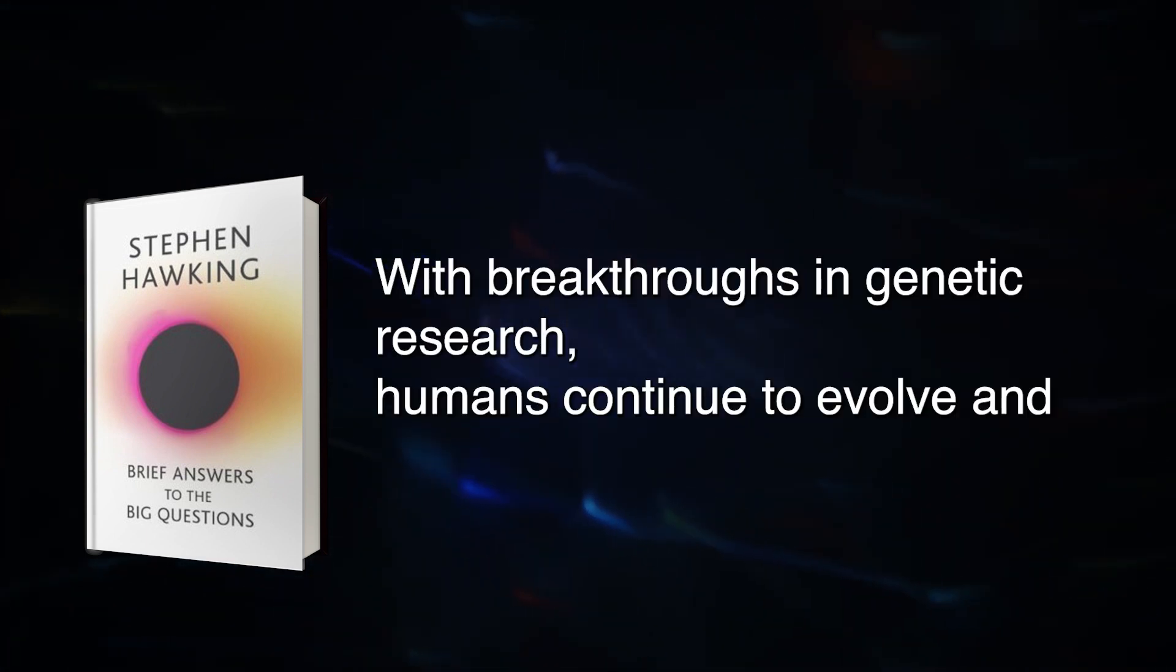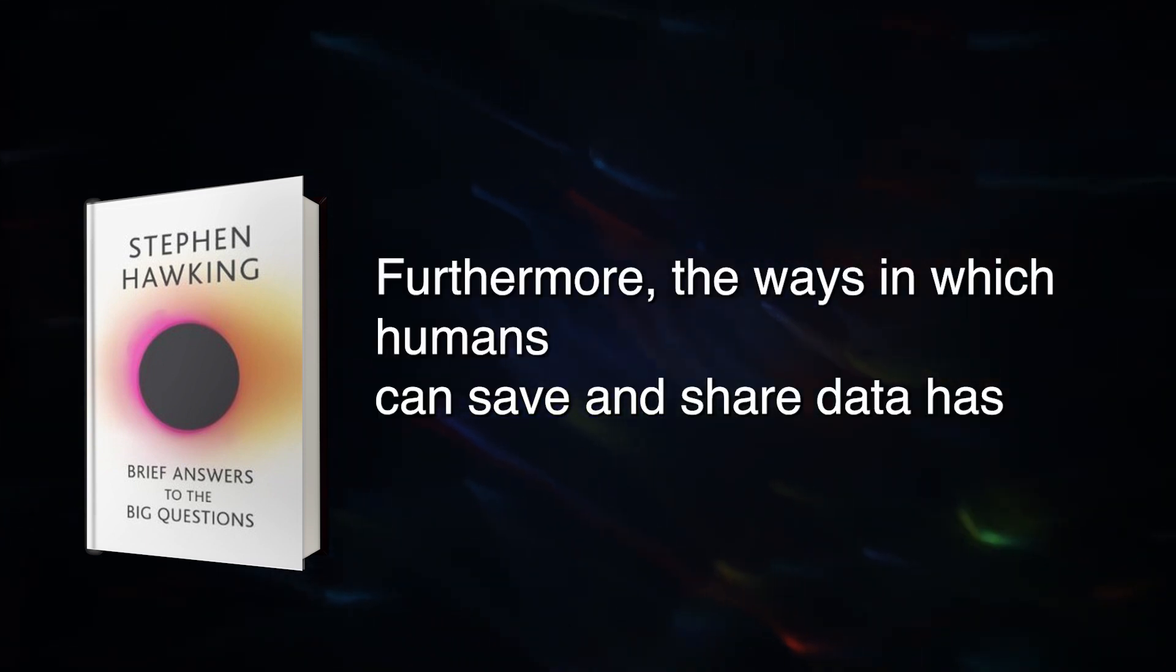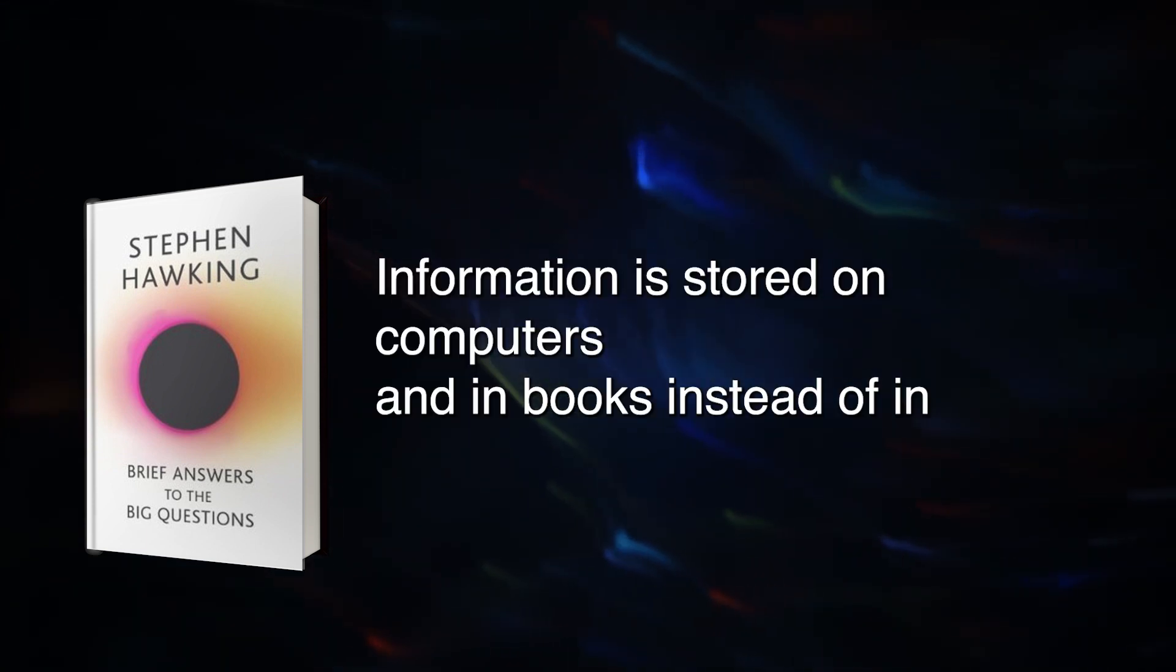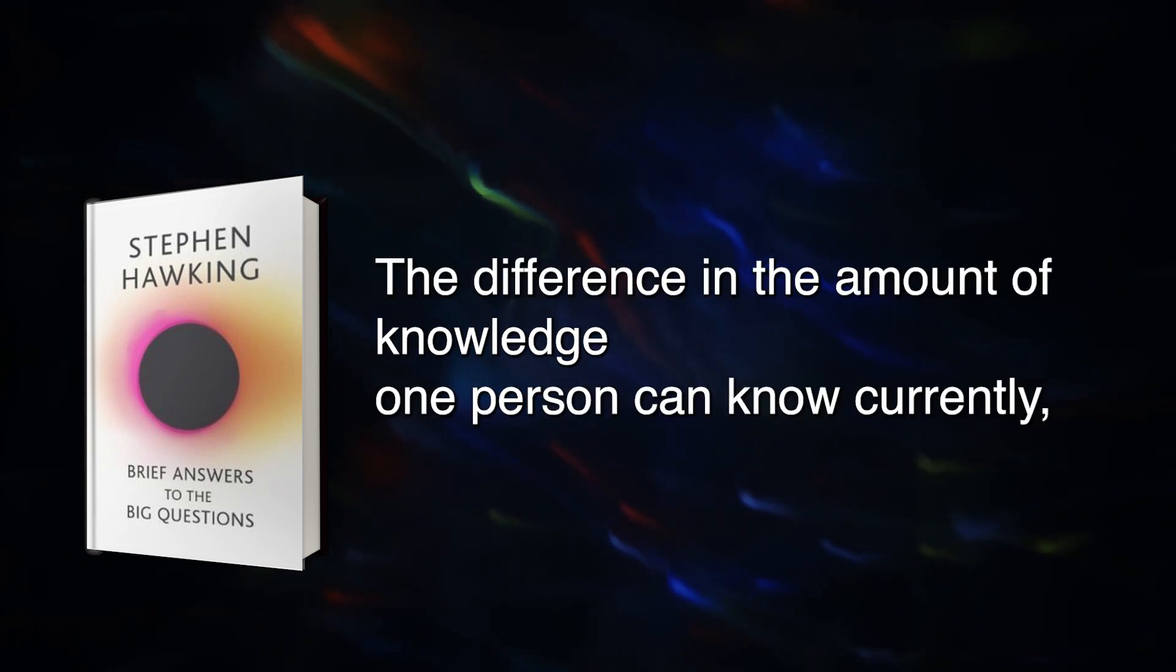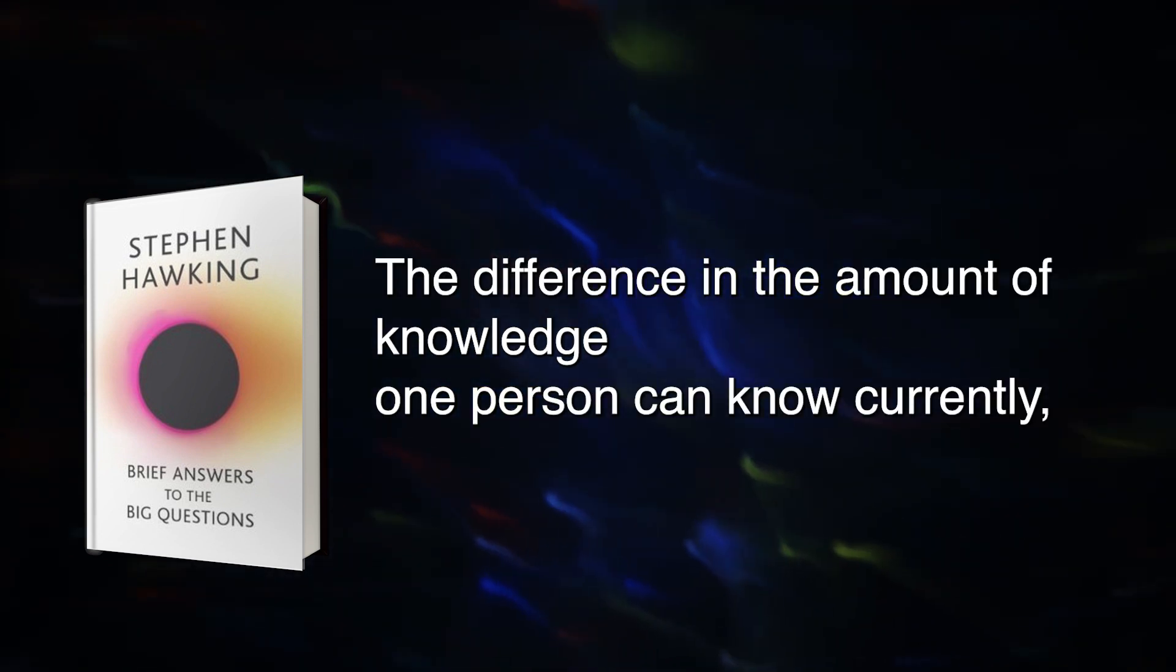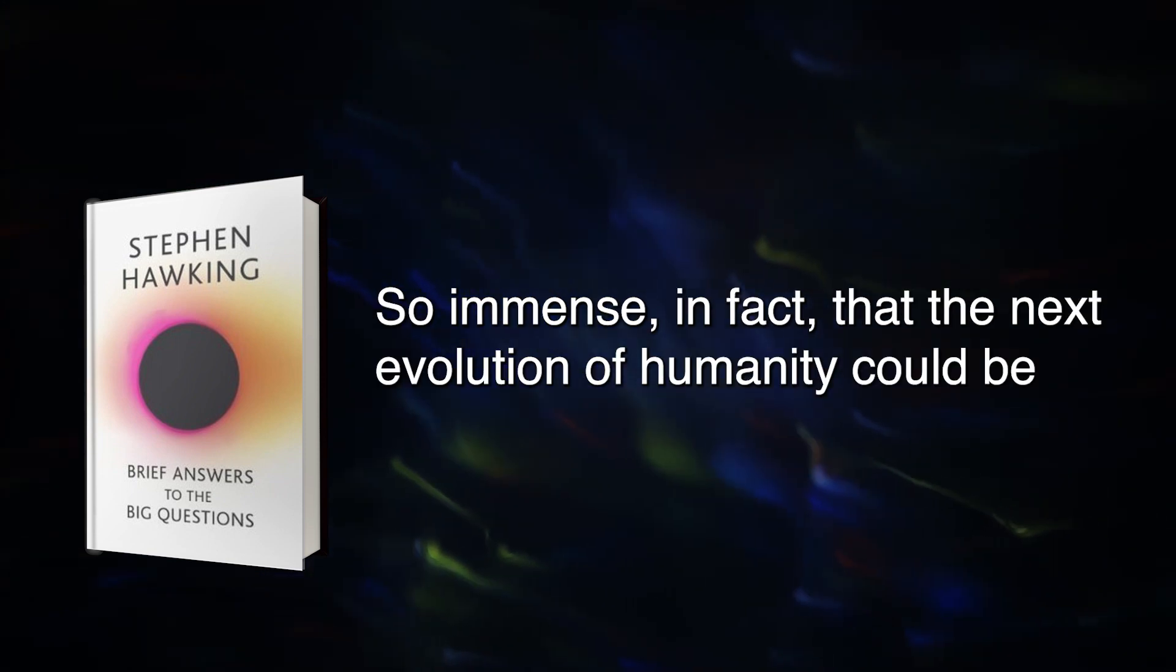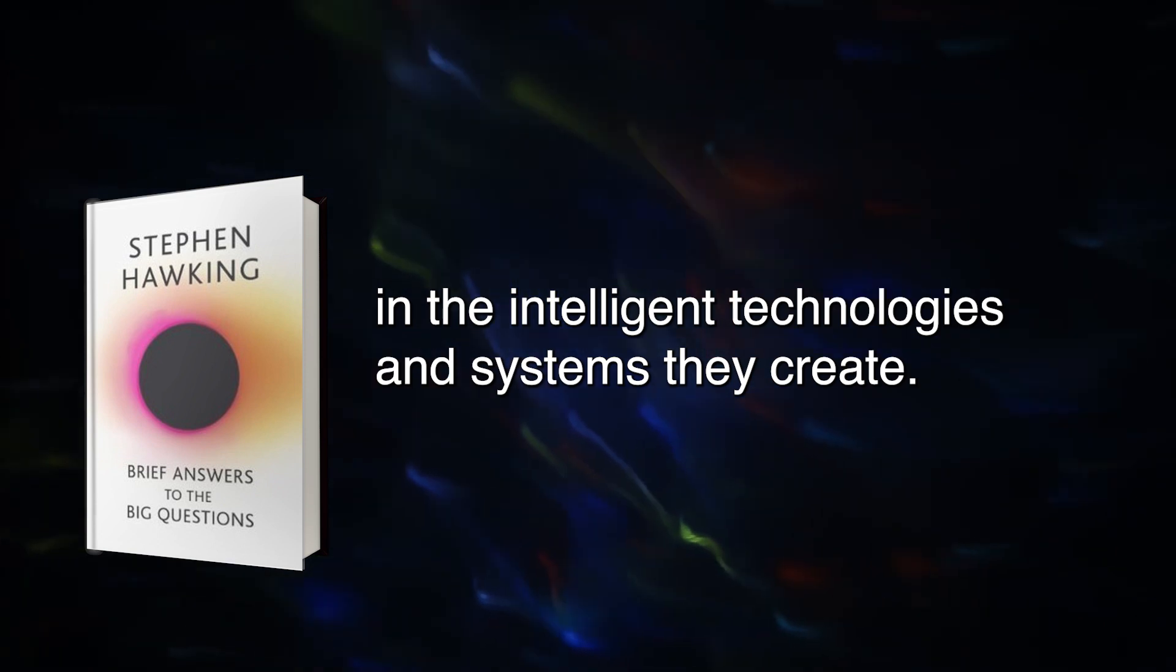With breakthroughs in genetic research, humans continue to evolve and could ultimately breed a sort of superhuman. Furthermore, the ways in which humans can save and share data has allowed the species to evolve beyond DNA. Information is stored on computers and in books instead of in tightly bound genetic codes. The difference in the amount of knowledge one person can know currently, as compared to 100 years ago, is immense. So immense, in fact, that the next evolution of humanity could be in the intelligent technologies and systems they create.